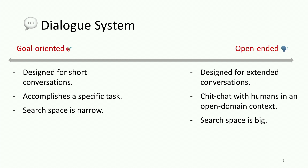On the other hand, open-ended dialogue systems are designed for extended conversations and to chit-chat with humans in an open-domain context that can be about any topic. As opposed to goal-oriented systems, the search space in open-ended dialogue systems is very big, and this is due to the diversity of possible correct answers.